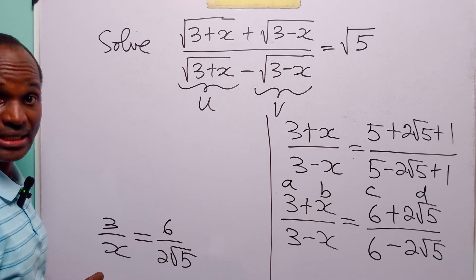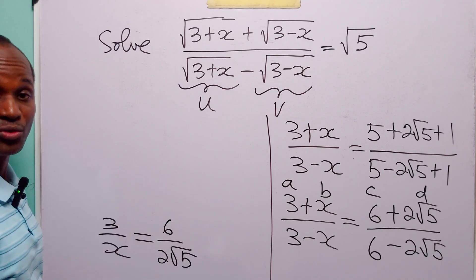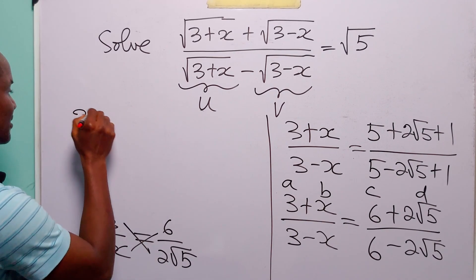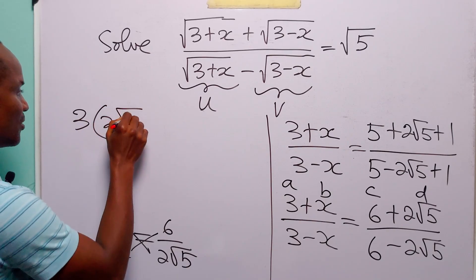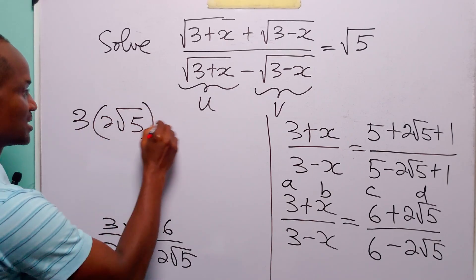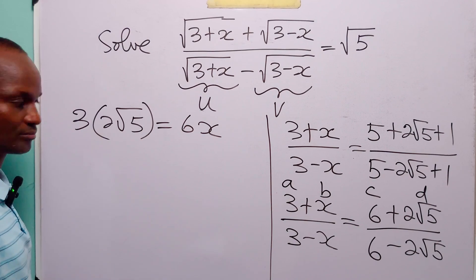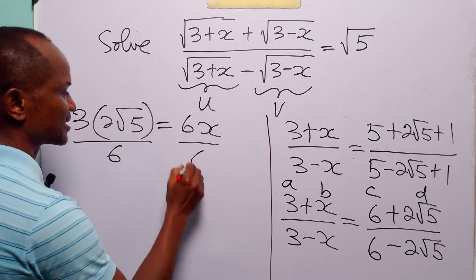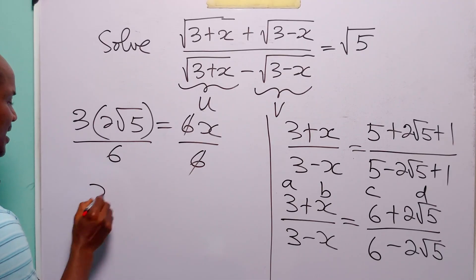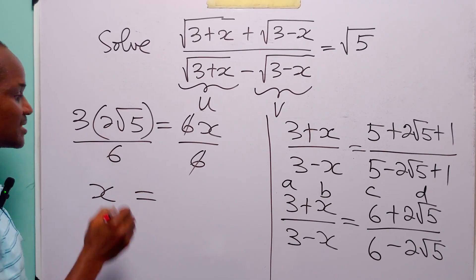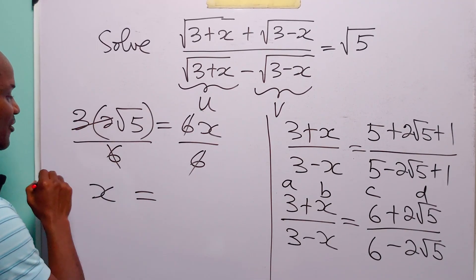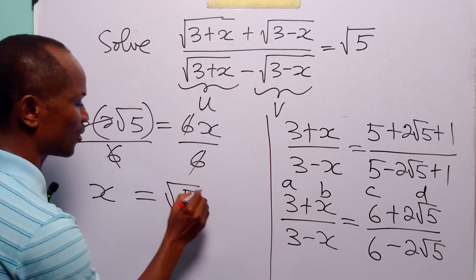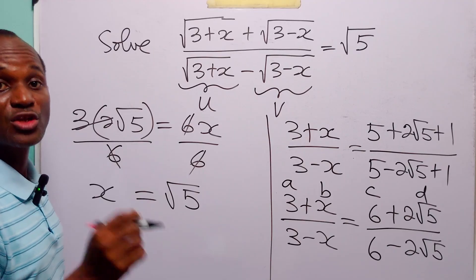With the equation in this form, all we now have to do is cross multiply. When we do that we have that 3 times 2 root 5 is equal to 6x. Dividing both sides by 6, we have that x is equal to — 3 times 2 is 6, which cancels with the 6 — leaving us with root 5.